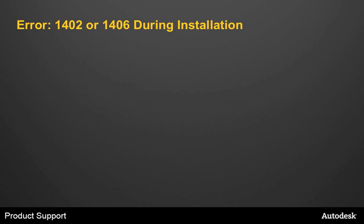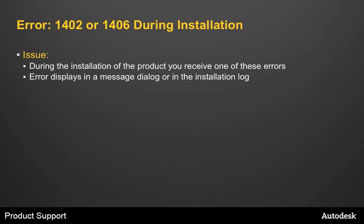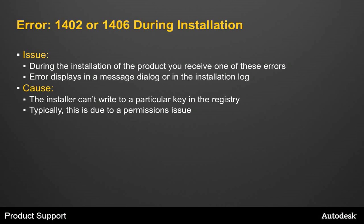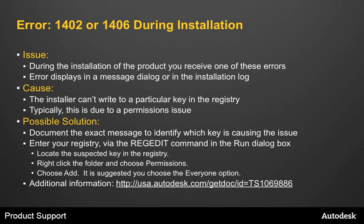Next up are 1402 or 1406 errors. You typically see these errors during installation and the error will either pop up in a message dialog box or you'll see it listed in the installation log. The cause is usually that the installer can't write to a particular key in the registry, typically due to a permissions issue. To solve this, first document the exact message so you know exactly what key in the registry is causing the issue. Then go into the registry using regedit, locate that specific key, right-click on it and choose Permissions. Then choose Add and select the Everyone option. There's more detailed information about this at our Knowledge Base.